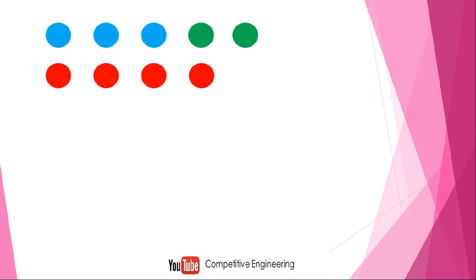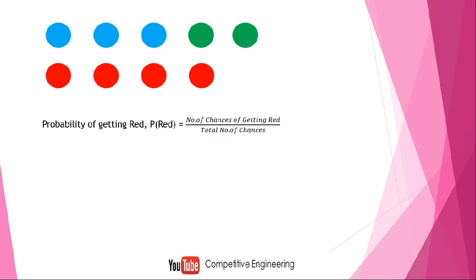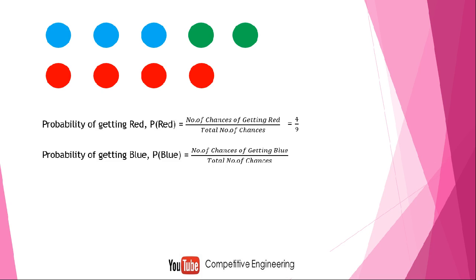Consider a group of balls: there are three blue balls, two green balls, and four red balls. What is the probability of getting a red ball, P(red)? The total number of chances of getting red is simply how many red balls there are — four. The total number of chances is the total number of balls — nine. So P(red) equals four by nine.